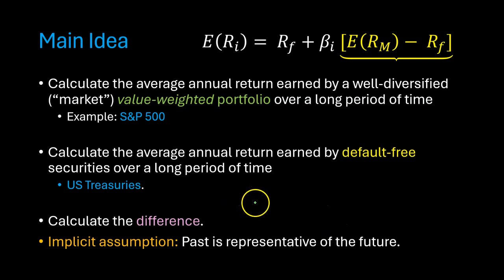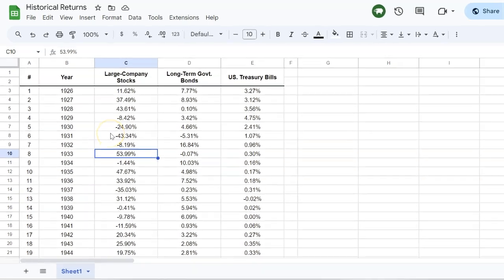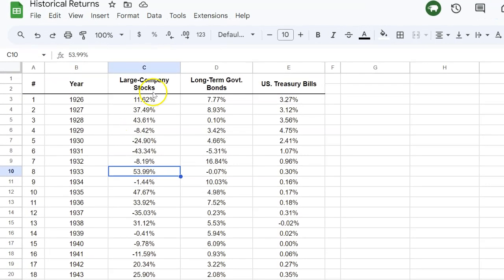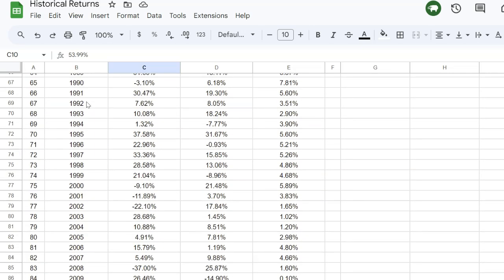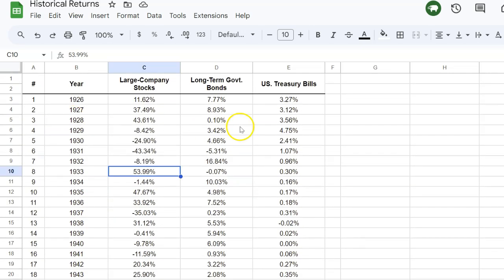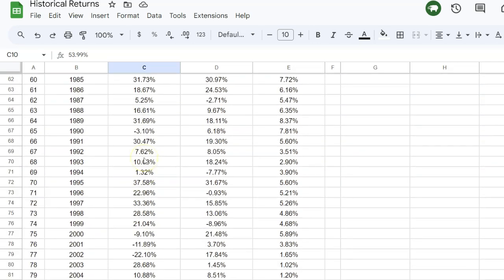So with that, let me show you how you can come up with this estimate using historical data. So what I'm doing here is showing you the historical returns earned by large company stocks, long-term government bonds, and U.S. Treasury bills. The data goes all the way from 1926 till 2020. The first thing to understand here is that U.S. Treasury bills and long-term government bonds are both different forms of borrowing by the government. The difference is that U.S. Treasury bills tend to have a maturity of one year or less. In this case, we're looking at bills maturing in one year. And then we're looking at long-term government bonds, which typically have a maturity of 10, 20, or 30 years.